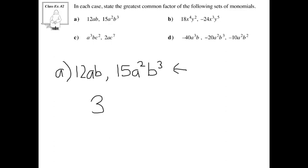Then what you would do is multiply it by the common variable to the lowest common exponent. For example, for a, we've got a and we've got a squared. Well, you know there's at least one a in each one of these, so that would be part of your greatest common factor. And we know that b — there's a b in both, and there's at least one b. So your greatest common factor will be 3ab.